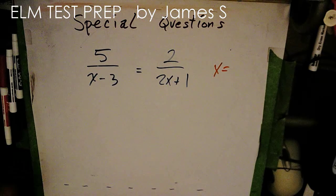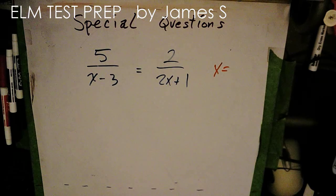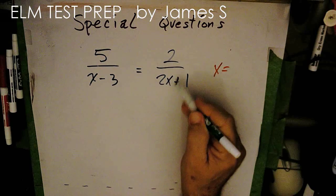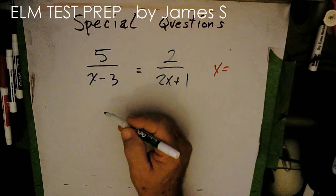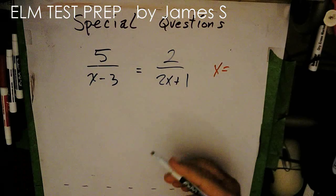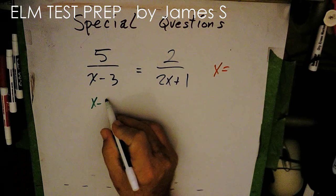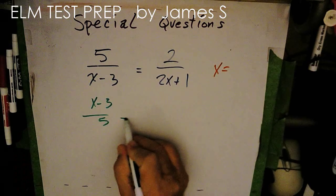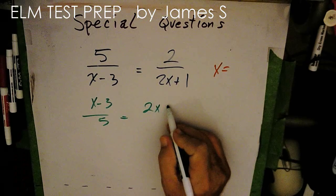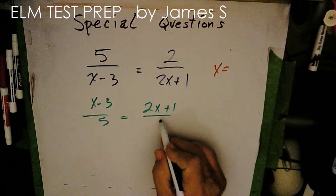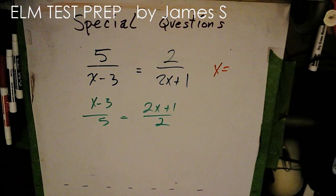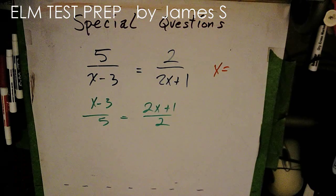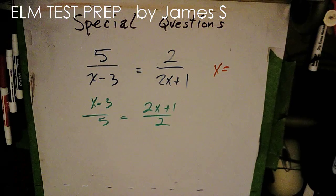But let's use our little trick that we learned where we can take a fraction on one side and a fraction on the other side and just flip both fractions. Well, it doesn't look quite so daunting with the x's on top.